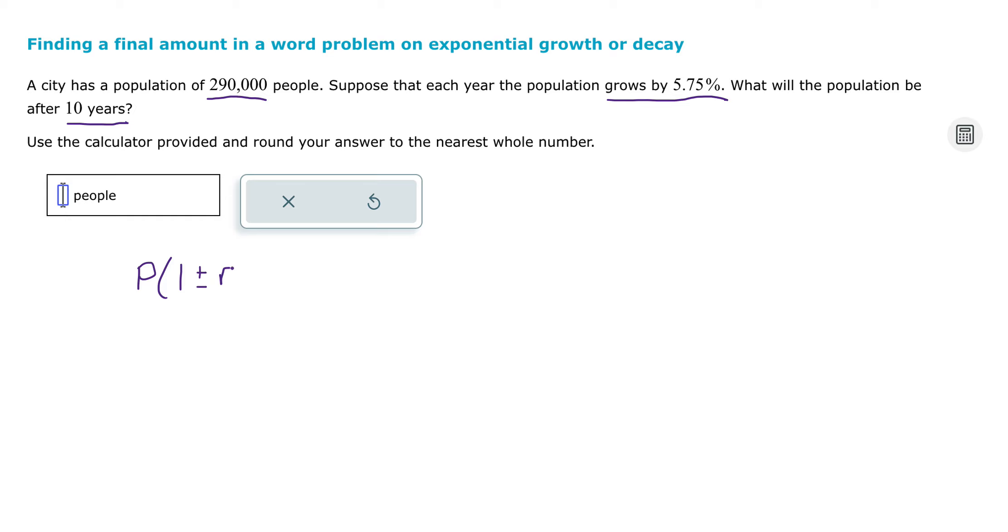We decide whether it's plus or minus based on whether the situation is an increasing situation or a decreasing situation. And then we raise that to the power of T, or T is time. And that gives us our final amount.